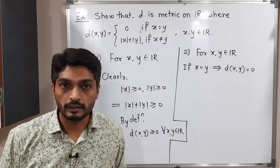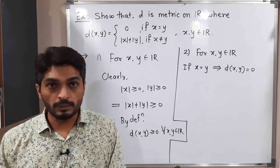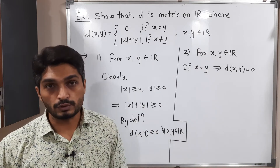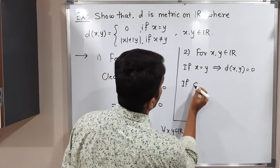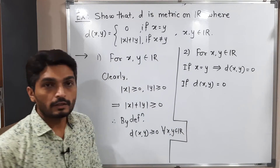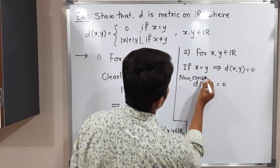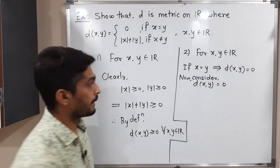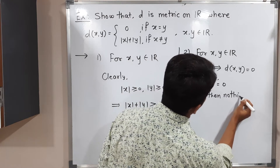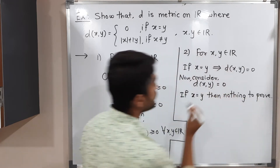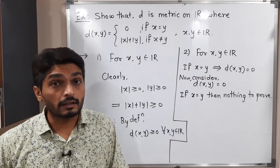We have proved: X = Y implies D(X,Y) = 0. Now we must assume D(X,Y) = 0 and prove X = Y. Consider D(X,Y) = 0. If we happen to get X = Y immediately, then there is nothing to prove. The problem arises when X is not equal to Y.